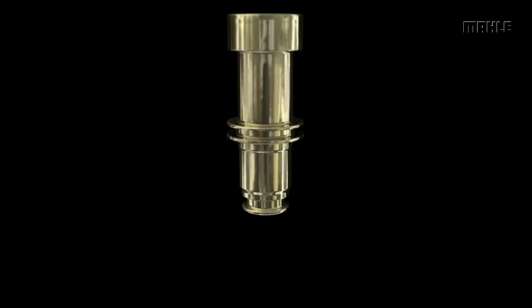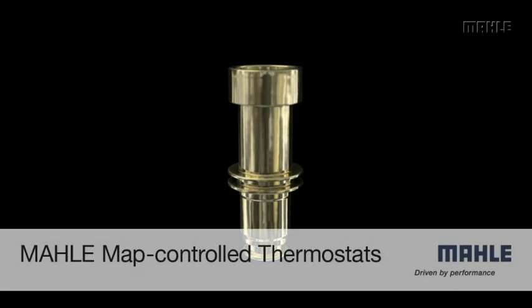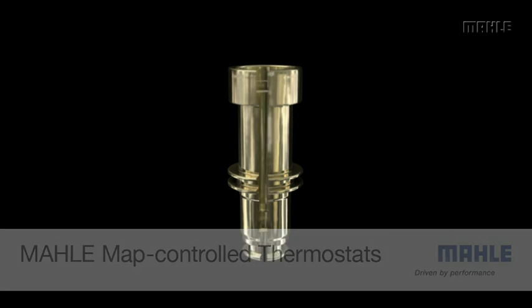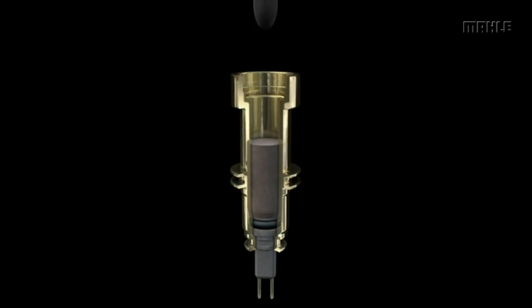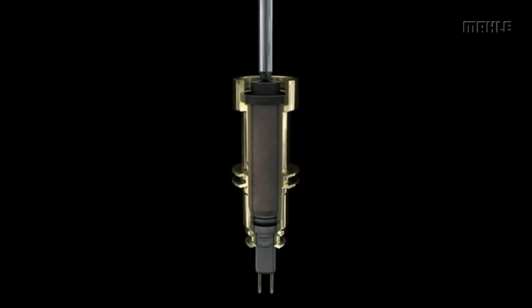This video illustrates how a Mala MAP-controlled thermostat is constructed and how it functions. The MAP thermostat uses a wax element just like a standard thermostat, except that a small electric heating unit is inserted as you see here.